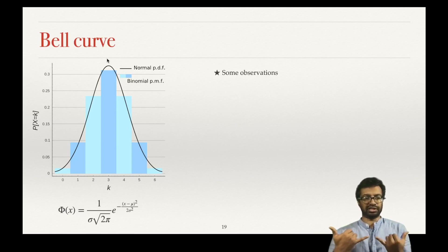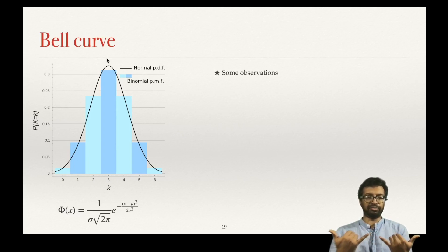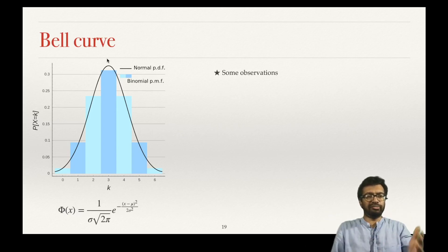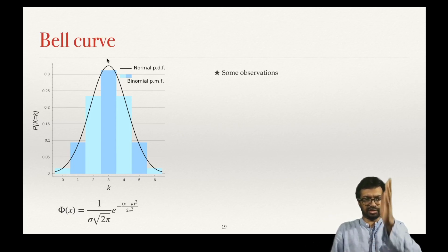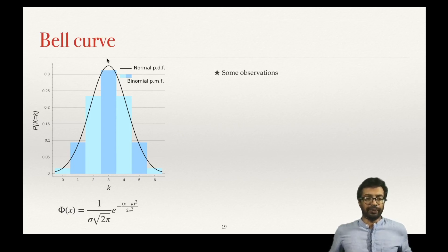Because the weight on both sides of this mean at k equals 3 is the same, k equals 3 is the mean. So in our bell curve we can notice that the mean happens at the topmost point — the mean occurs at the greatest value.